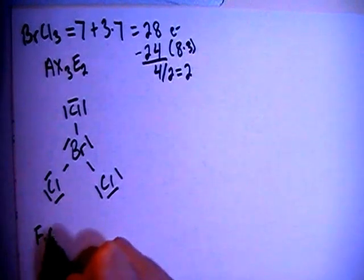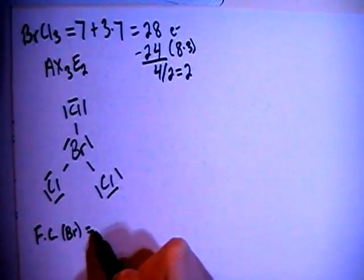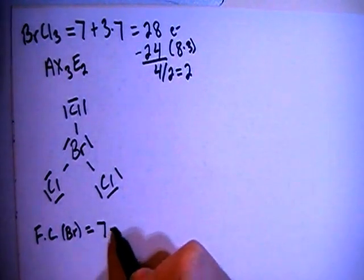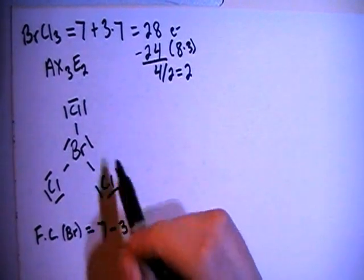Let's go ahead and verify that by checking the formal charges. So the formal charge on the bromine in the center is going to be the 7 valence electrons brought in, minus 1, 2, 3 bonds, minus 1, 2, 3, 4 non-bonding electrons for a formal charge of 0.